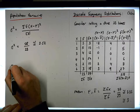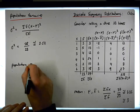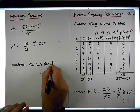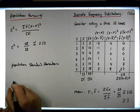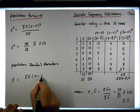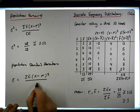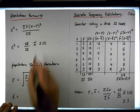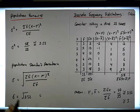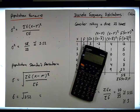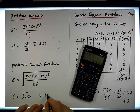If we want to calculate the population standard deviation, it's just the square root of the variance. So sigma is the square root of the sum of the f's times x minus mu squared, divided by the sum of the f's. We end up with sigma equals the square root of 2.52, which gives us a value of 1.59.